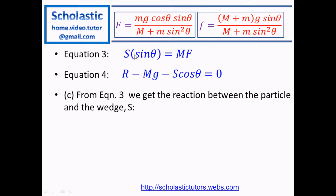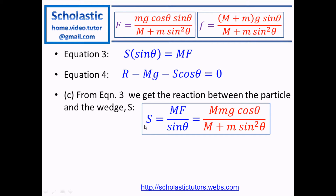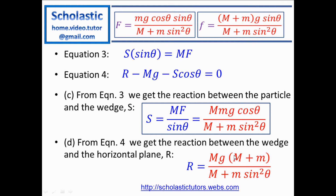From equation three, S equals capital M times capital F divided by sin theta, and we substitute the known value of capital F to get S. From equation four, substituting S and simplifying gives R equals Mg times (M plus simple M) divided by (capital M plus simple M sin squared theta). This is the last part of the question, and that's the end of the answer.